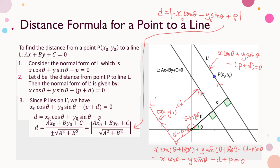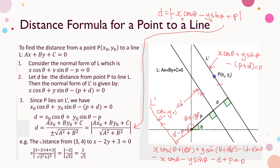We can check this formula with an example: the distance from the point (3, 4) to the line x − 2y + 3 = 0. After substituting and simplifying, we get 2/√5.